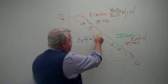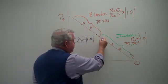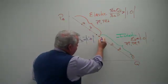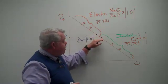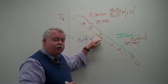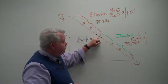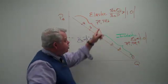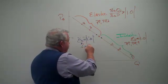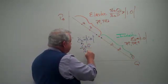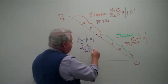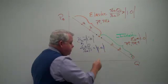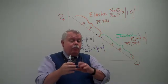Likewise, if you take any two prices that are equidistant from the midpoint and calculate the coefficient for the price elasticity of demand, that coefficient — percentage change in quantity over percentage change in price — for those two prices would also be equal to 1.000 in absolute value. That's the significance of that midpoint.